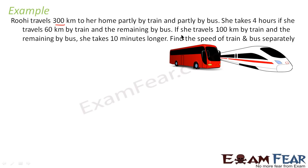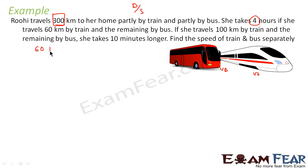Let's take one more example. Ruhi travels 300 kilometers to her home, partly by train and partly by bus. She takes 4 hours if she travels 60 kilometers by train and the remaining by bus. Let the speed of the train be Vt and the speed of the bus be Vb.